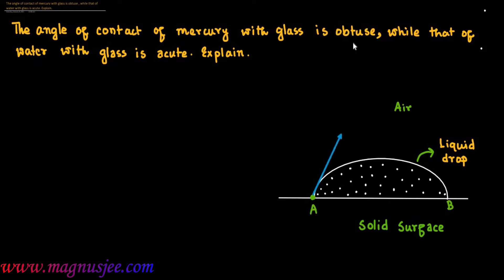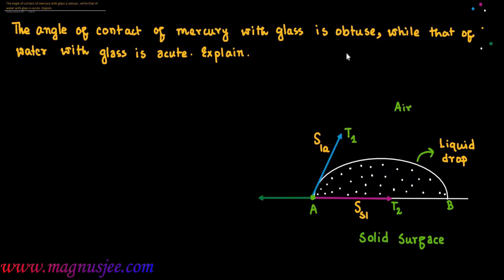AB is the interface of solid and liquid, along the tangent AT3. Surface tension acting on the liquid-air interface acts along tangent AT1, so SLA is the surface tension on the liquid-air interface. Along tangent AT2, SSL is the surface tension acting on the solid-liquid interface. Along tangent AT3, SSA is the surface tension acting on the solid-air interface.